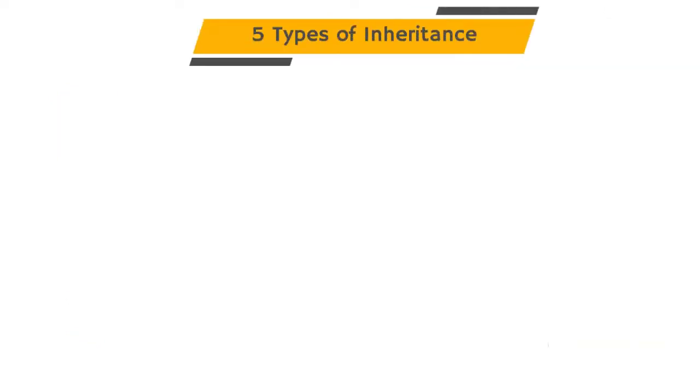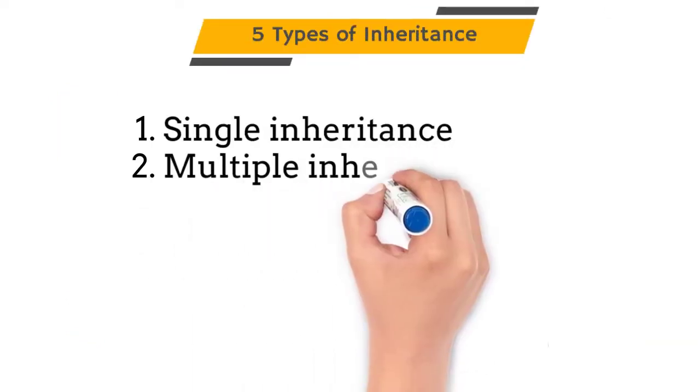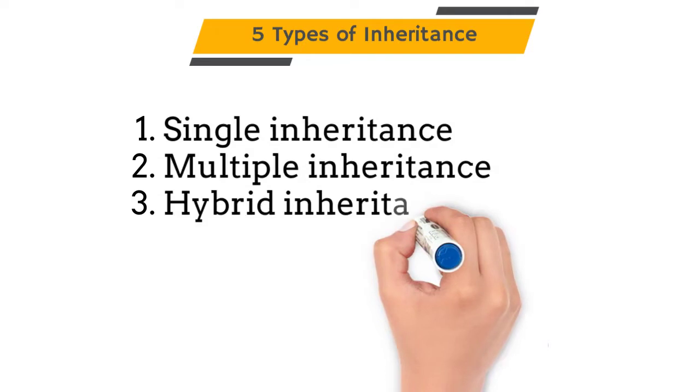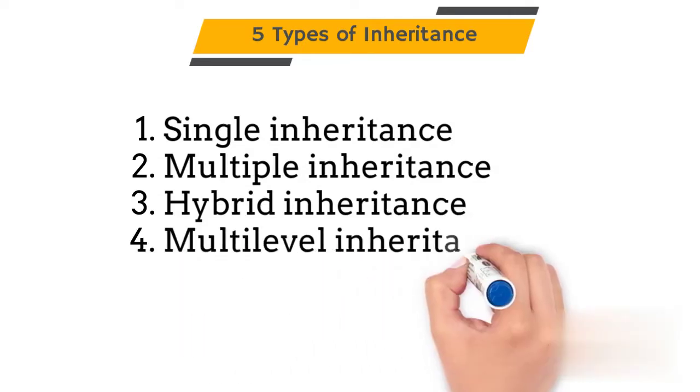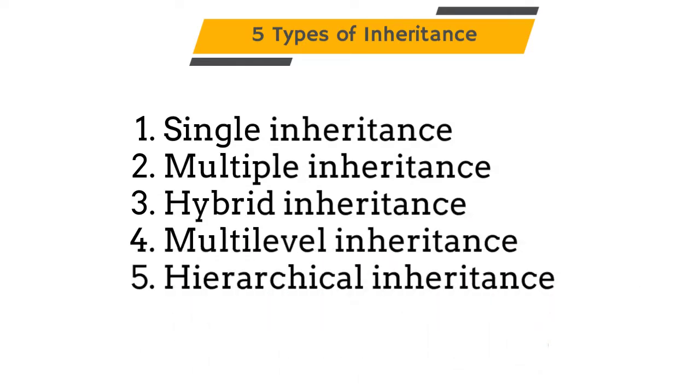There are 5 types of inheritance: single inheritance, multiple inheritance, hybrid inheritance, multilevel inheritance, and hierarchical inheritance.